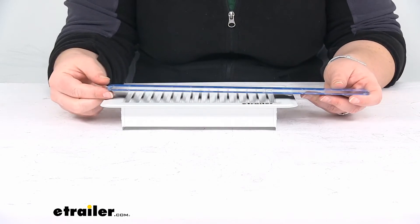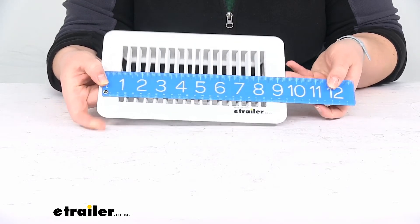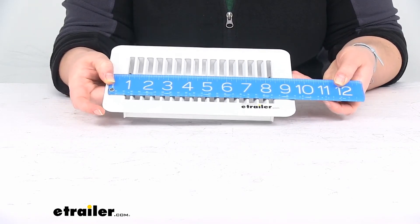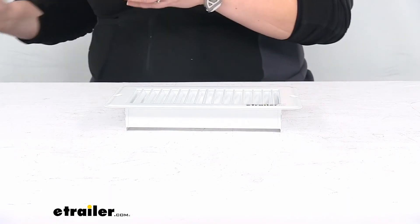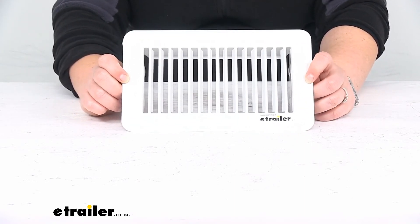The distance between the mounting holes for the screws are spread apart by about nine and three-quarter inches. It does not come with any mounting hardware so you will have to provide that on your own. Just two small screws should do it.